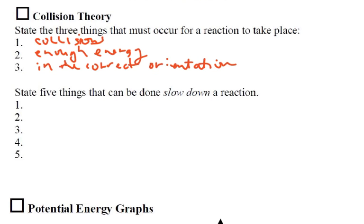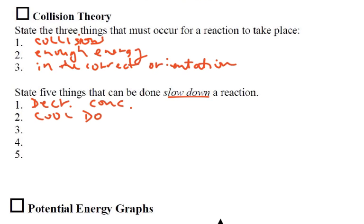Five things that can be done to slow down a reaction. We've been talking about how to speed up a reaction, and we said we could increase the concentration, so we can decrease the concentration. We could also cool down the reaction.